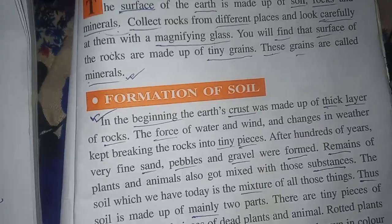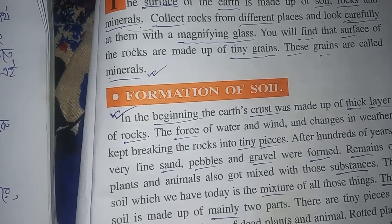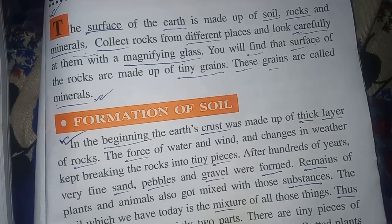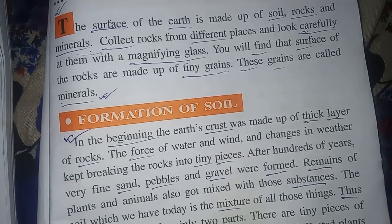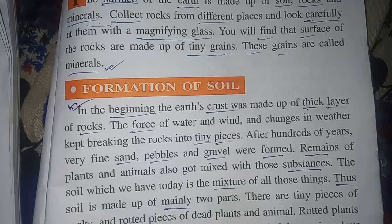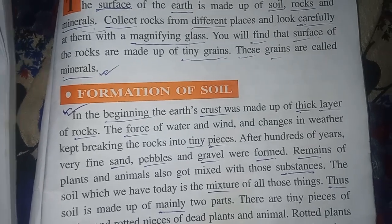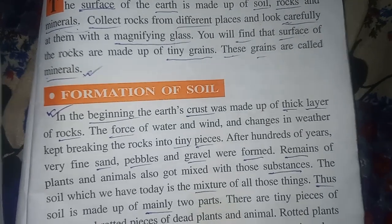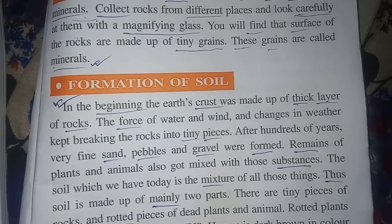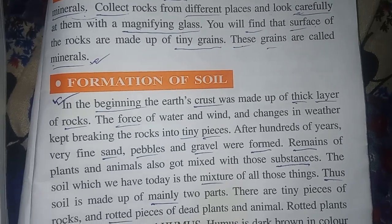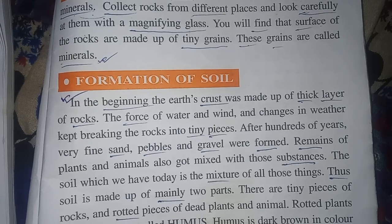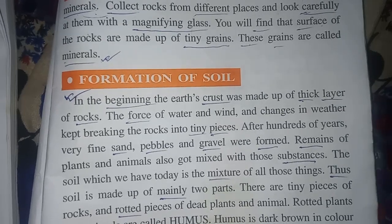Formation of soil. In the beginning, the earth's surface was made up of a thin layer of rocks. The force of water and wind, and changes in the weather, kept breaking the rocks into tiny pieces. After hundreds of years, very fine sand, pebbles, and gravel were formed.